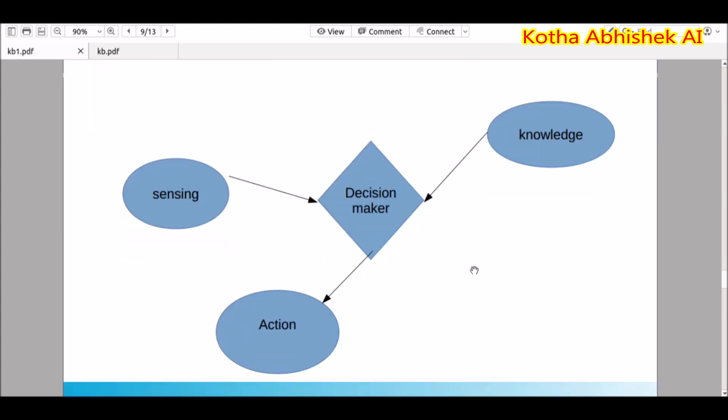You can see this diagram. This is the decision maker, this is the sensing from environment and this is the action. Imagine if there is no knowledge here. Whatever it takes input from the environment, it will just perform action according to its own style. But that is not the case with artificial intelligence, right? Because it should perform action which is the best way. The best action is performed only if you have some knowledge.